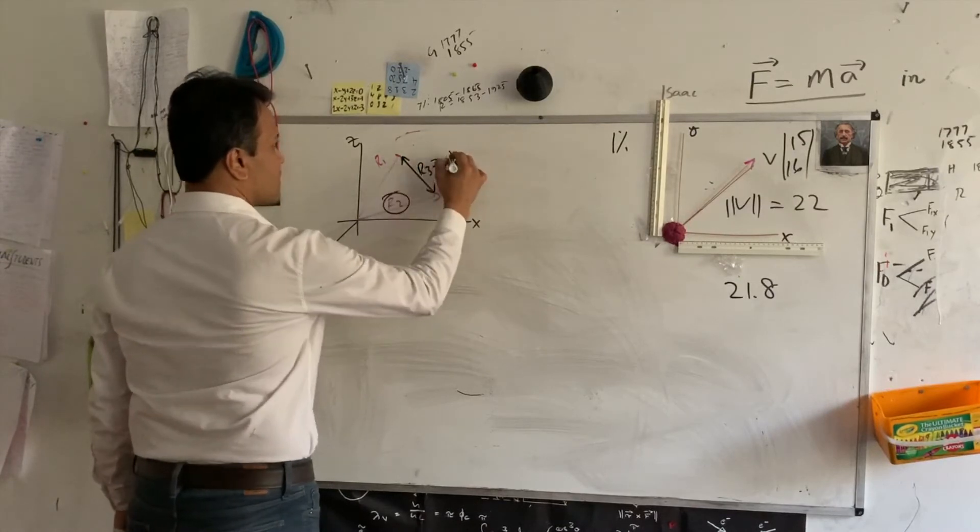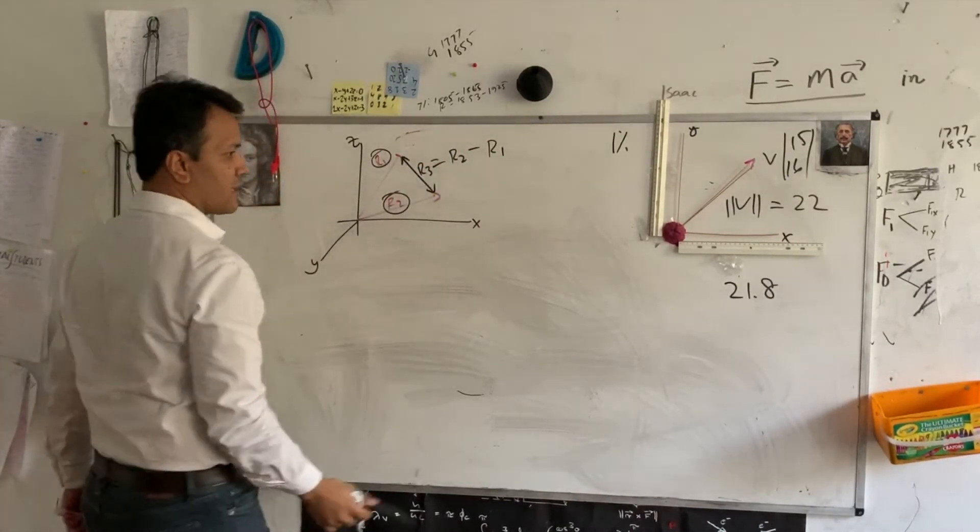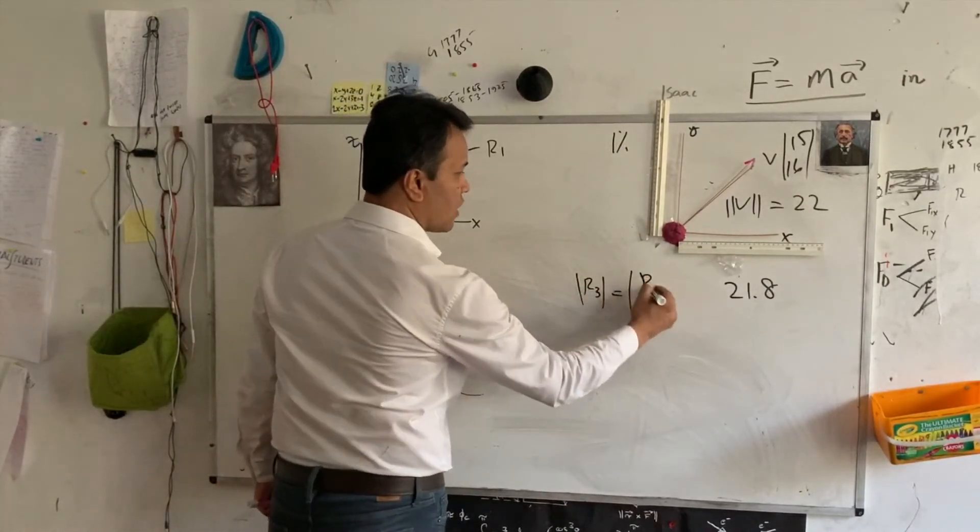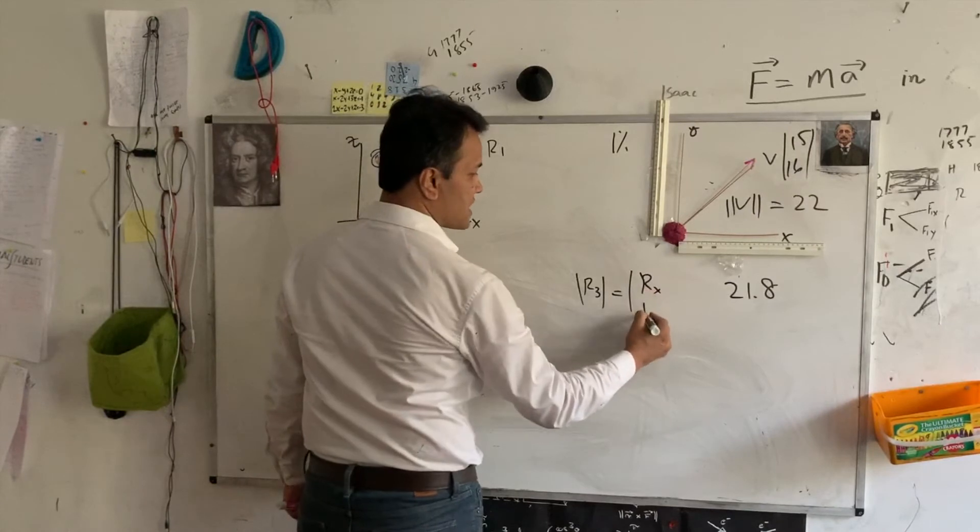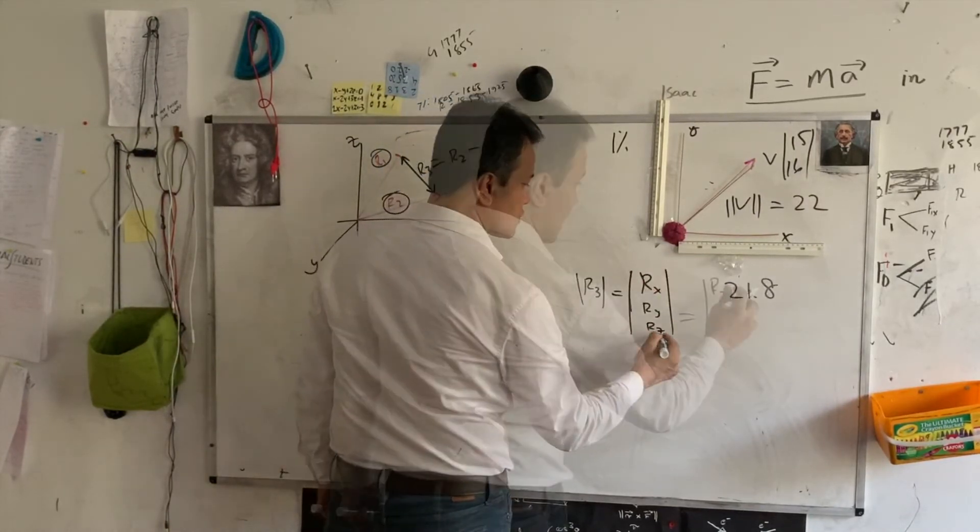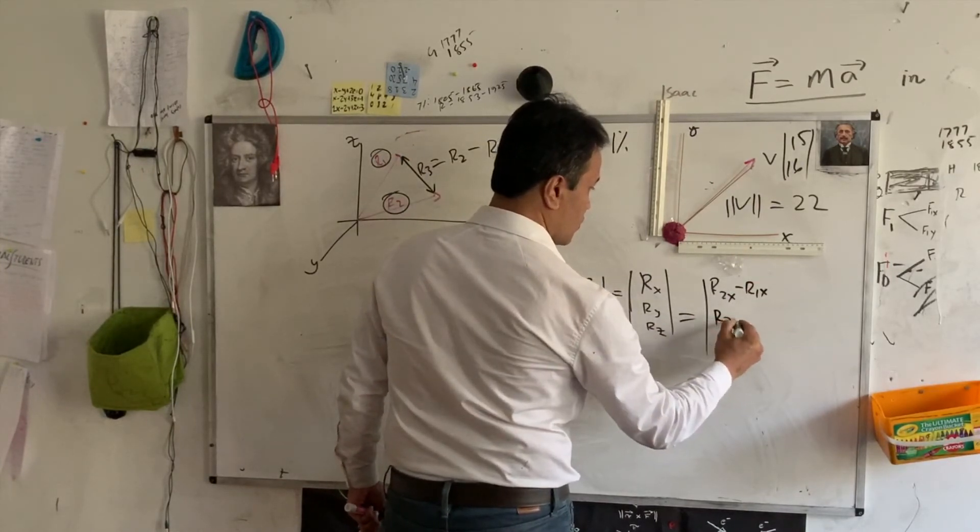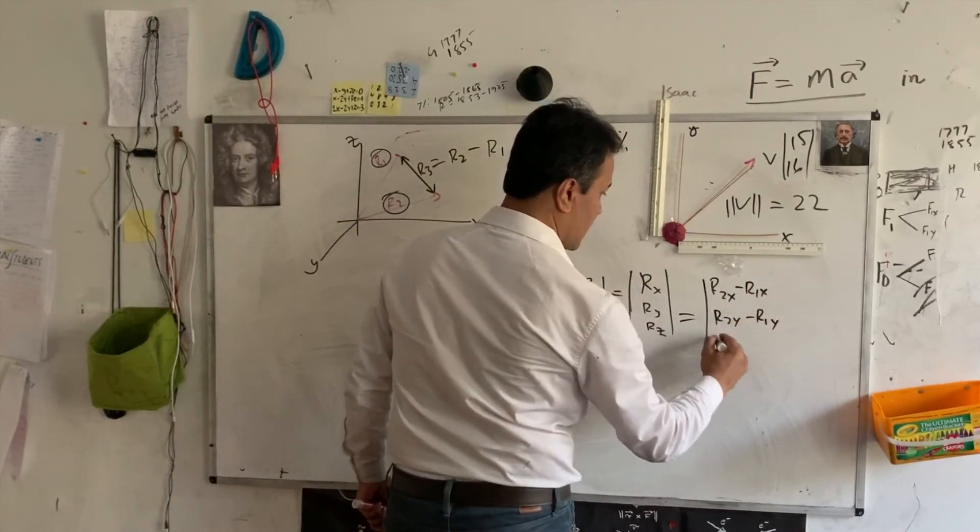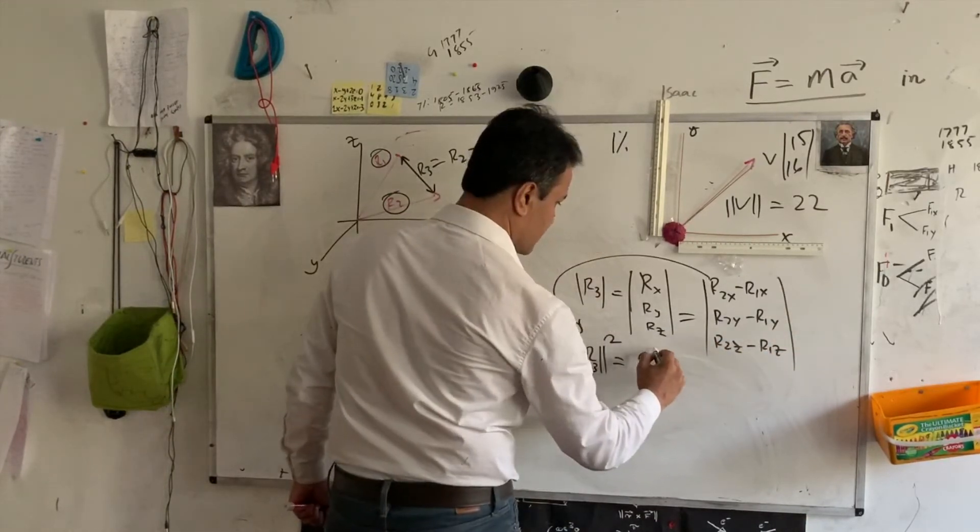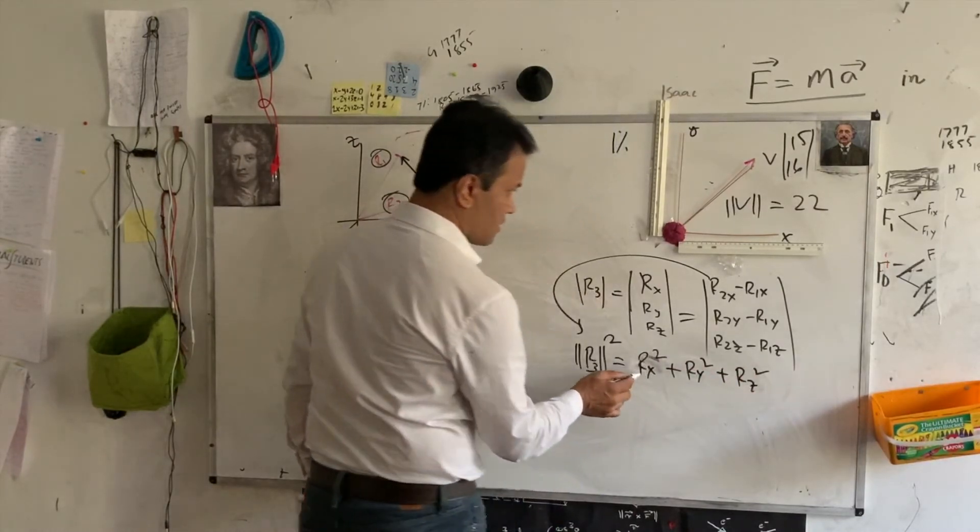R3 is r2 minus r1. So, I'm going to go ahead and write down r3 and all components of r3, which is rx, ry, and rz. So, r2x minus r1x, r2y minus r1y, r2z minus r1z squared.